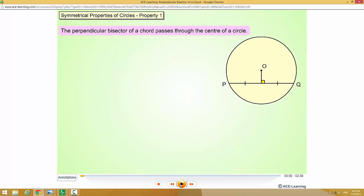The property that we are going to learn about is the perpendicular bisector of a chord passes through the center of a circle. Bisector means that it will cut a chord exactly into two, divide into half.